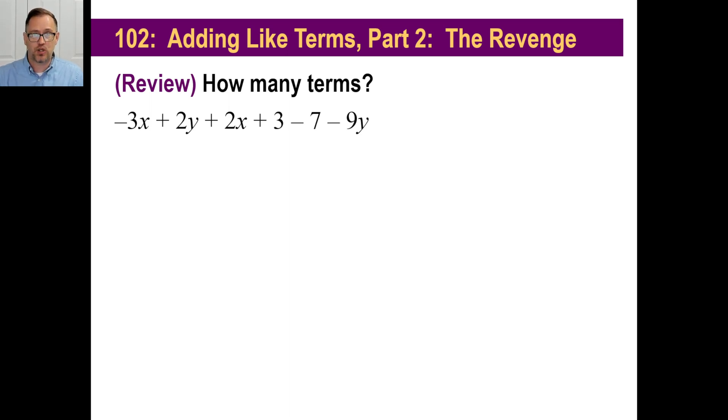You tell me how many terms are in this expression. Not an equation, right? It's an expression. There's no equal sign. A term is something that's separated by a plus or a minus. So there's one, two, three, four, five, six terms. You could add those like terms together, couldn't you? You just get the x's together, the y's together, the constants together, and you got it. That's your expression simplified.